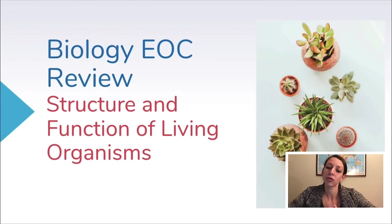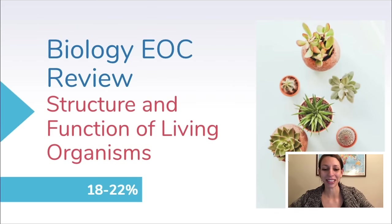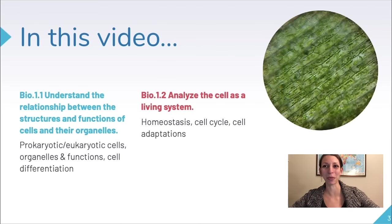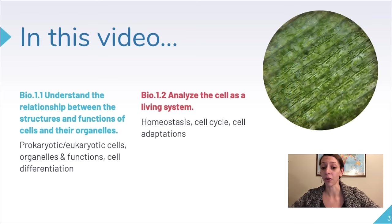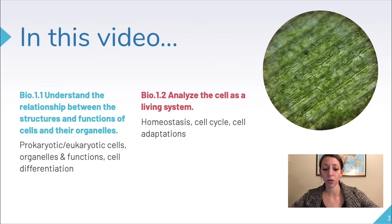This first video is going to focus on the structure and function of living organisms, which is about 18 to 22 percent of the biology end-of-course exam in North Carolina. In this video we're going to cover Essential Standards 1.1 and 1.2 and their objectives, which include topics like prokaryotic and eukaryotic cells, organelles and their functions, cell differentiation, homeostasis, the cell cycle, and cell adaptations. This video is meant as review, so we'll just cover the simplified essentials.